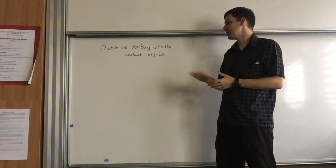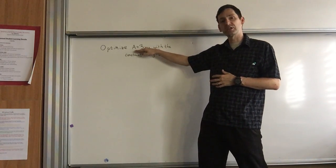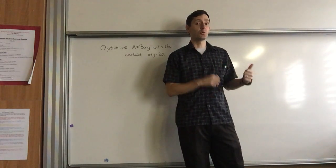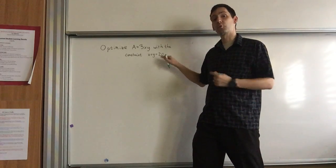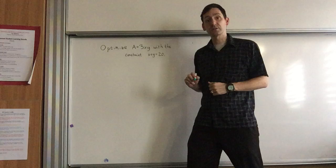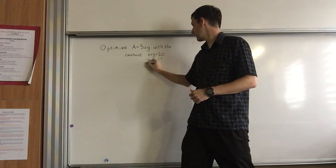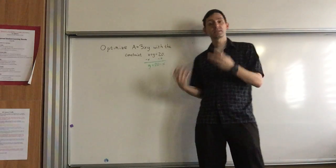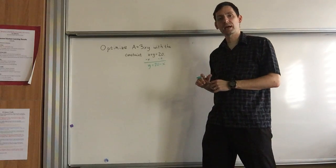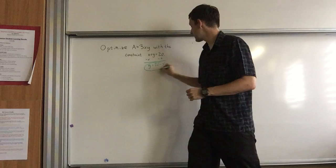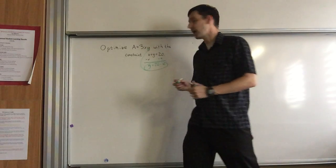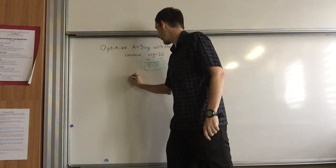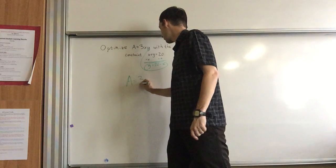What we're going to do is take our constraint and put it into our function so that we only have one variable. Most of the time we take derivative with respect to x, so I'm going to solve this equation for y and then put it into the A equation. I'm going to subtract x from both sides - I'm going to have y = 20 - x. Once I have this, y = 20 - x, I'm going to take that 20 - x and put it up into my original equation, the equation that I want to optimize. When I put it in there, I'm going to have A = 3 times x times y, but y is 20 - x.